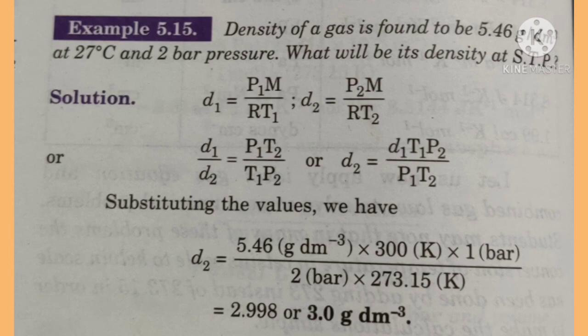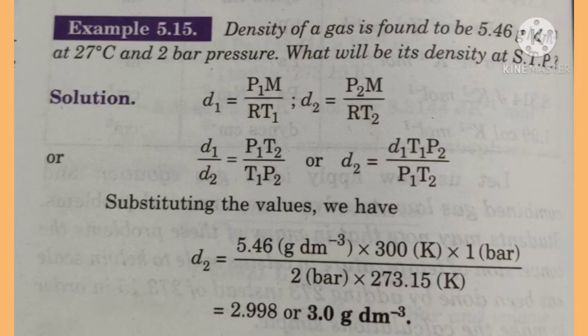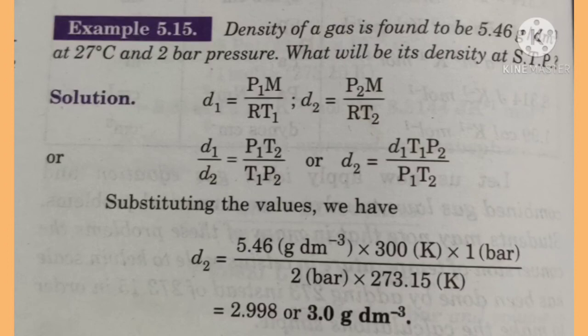Problem 4: The density of a gas is found to be 5.46 g/dm³ at 27°C and 2 bar pressure. What will be its density at STP? Using D1 equals P1M upon RT1 and D2 equals P2M upon RT2, we get D2 equals D1 × T1 × P2 upon P1 × T2. Substituting: D2 equals 5.46 × 300 × 1 upon 2 × 273.15, which equals approximately 3 g/dm³.